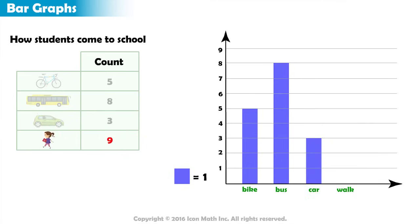Finally, there are nine who walk to school. So on top of the walk category, we color nine squares.